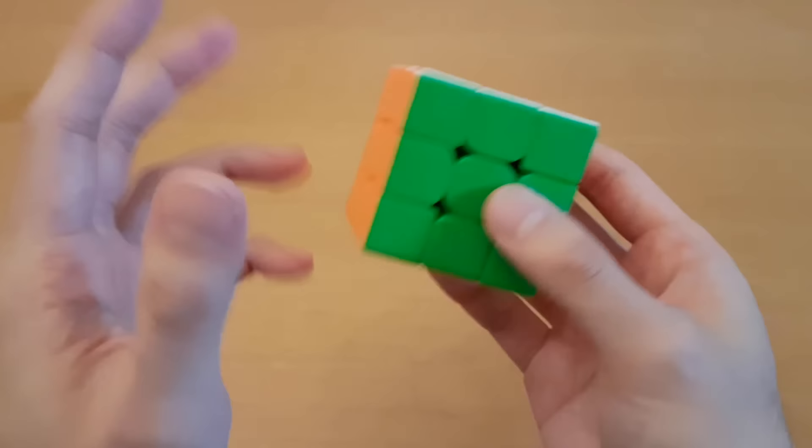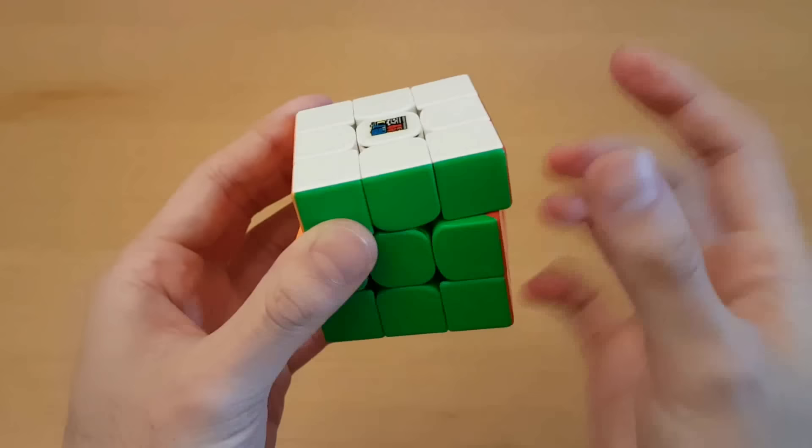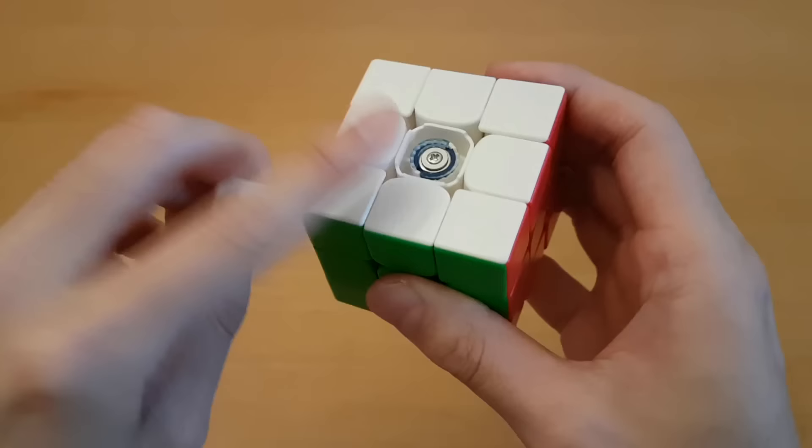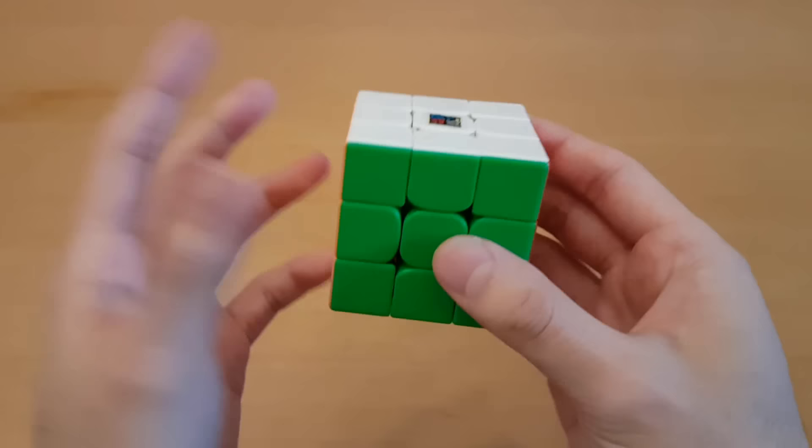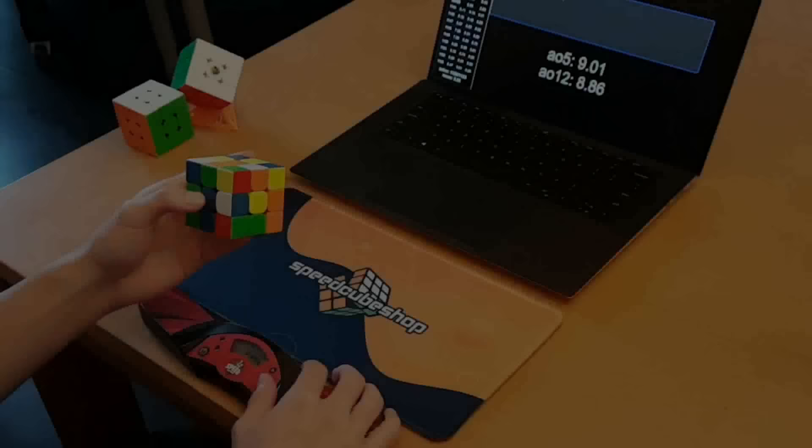Besides that, there's nothing really to adjust here. There are no adjustable magnets, which is one disadvantage of this compared to the Worm 2021. And inside the core, there is also the screw, but the way it comes out of the box is usually pretty okay. So it's a fast cube. And I like fast cubes now. So let's get to testing.